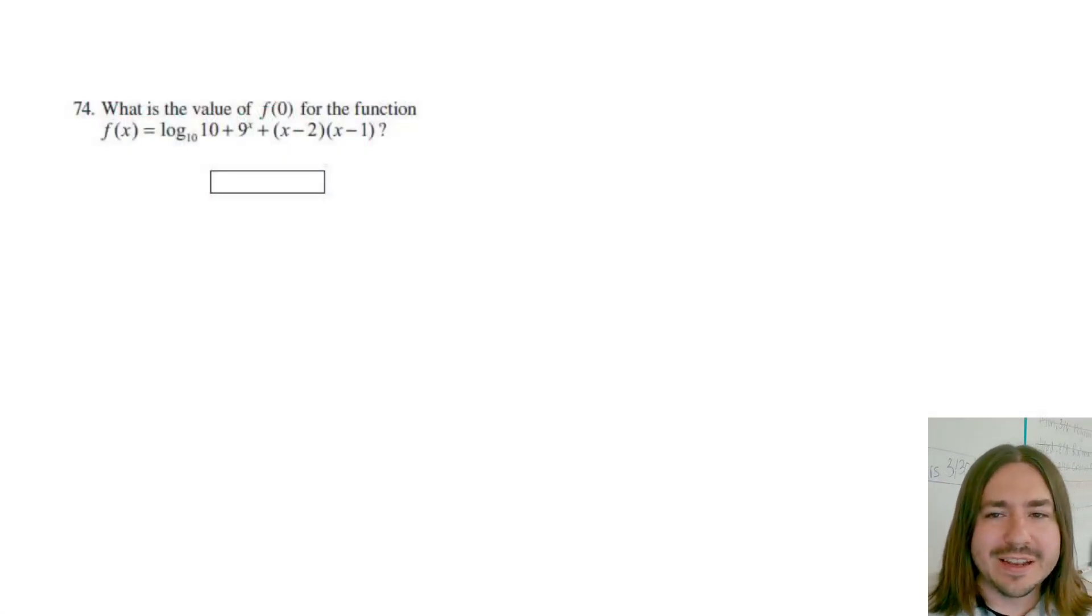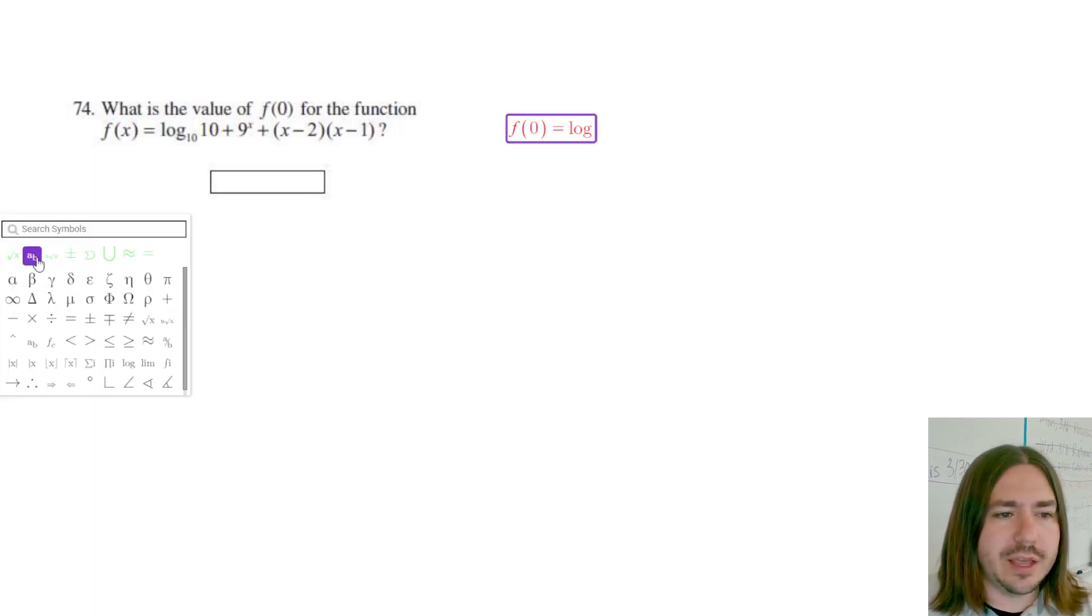Hey y'all, welcome back. Number 74 says what is the value of f of zero in this function. I'm not even gonna bother reading that, it's kind of a long function. But basically, if we want to calculate f of zero, that just means we need to substitute in zero everywhere where we see X. So let's go ahead and do that.